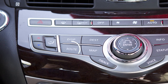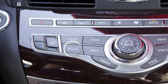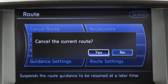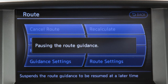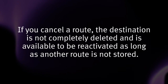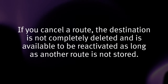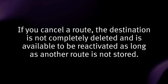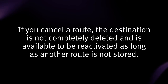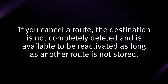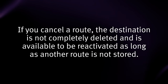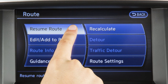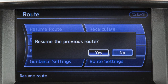To cancel a route, press the Route button, touch Cancel Route, then touch Yes to confirm. If you cancel a route, the destination is not completely deleted and is available to be reactivated as long as another route is not stored. To reactivate a canceled route, touch Resume Route on the Route menu screen.